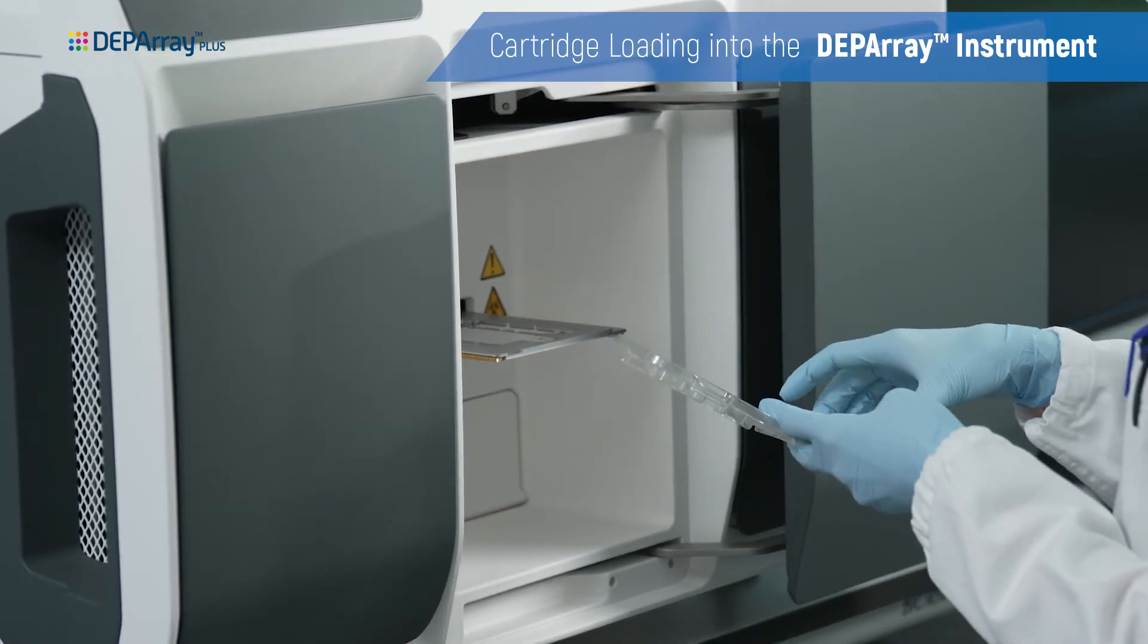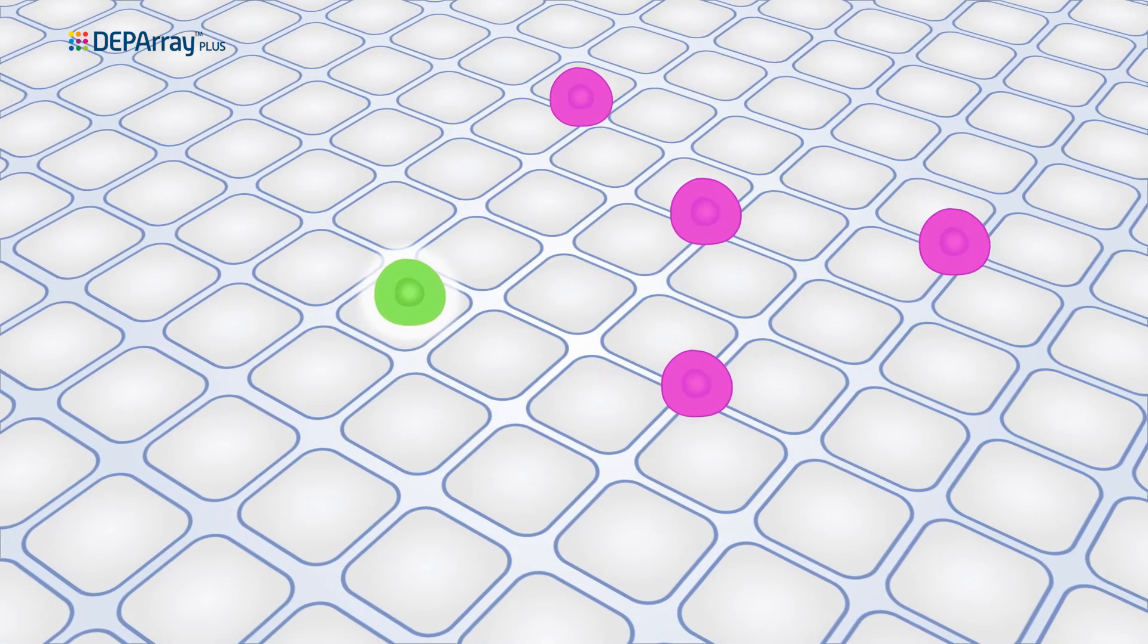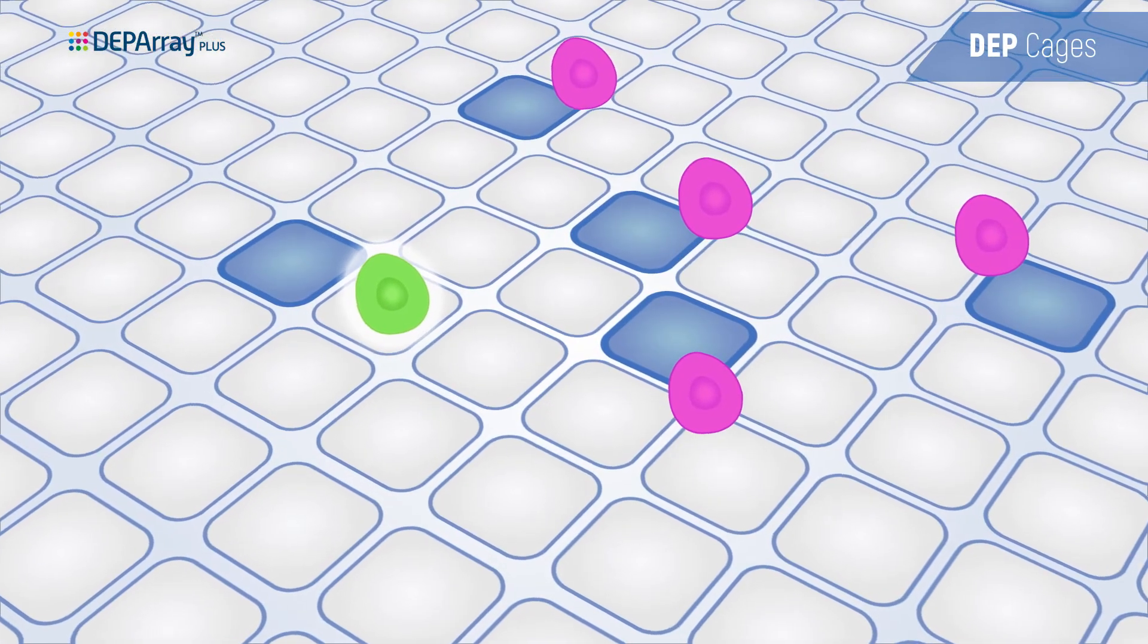After inserting the cartridge into the Depore instrument, the labeled cell suspension is channeled into a chamber paved with an array of 300,000 software-controlled electrodes where cells are captured in electronic cages.